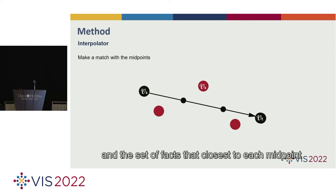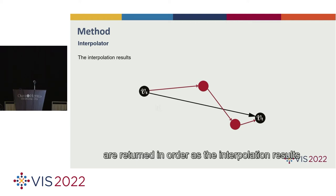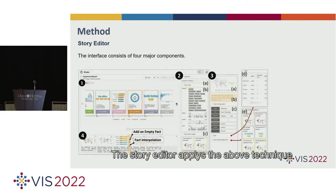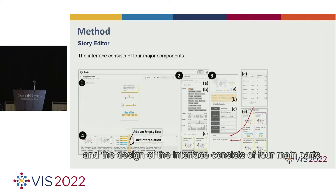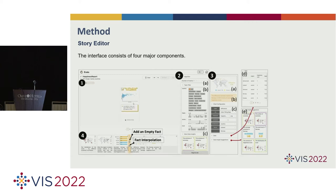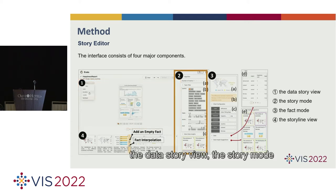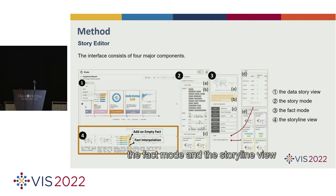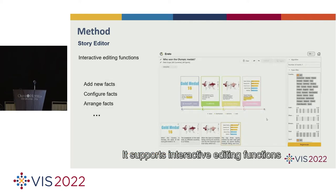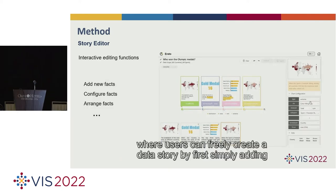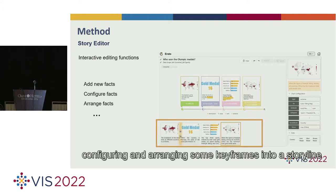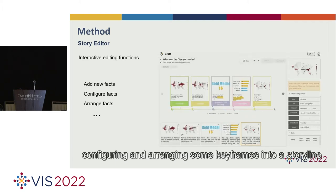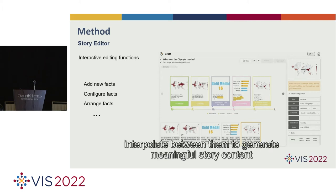The story editor applies the above technique and the design of the interface consists of four main parts: the data story view, the story mode, the fact mode, and the storyline view. It supports interactive editing functions, where users can freely create a data story by first simply adding, configuring, and arranging some keyframes into a storyline, and then interpolate between them to generate meaningful story content.